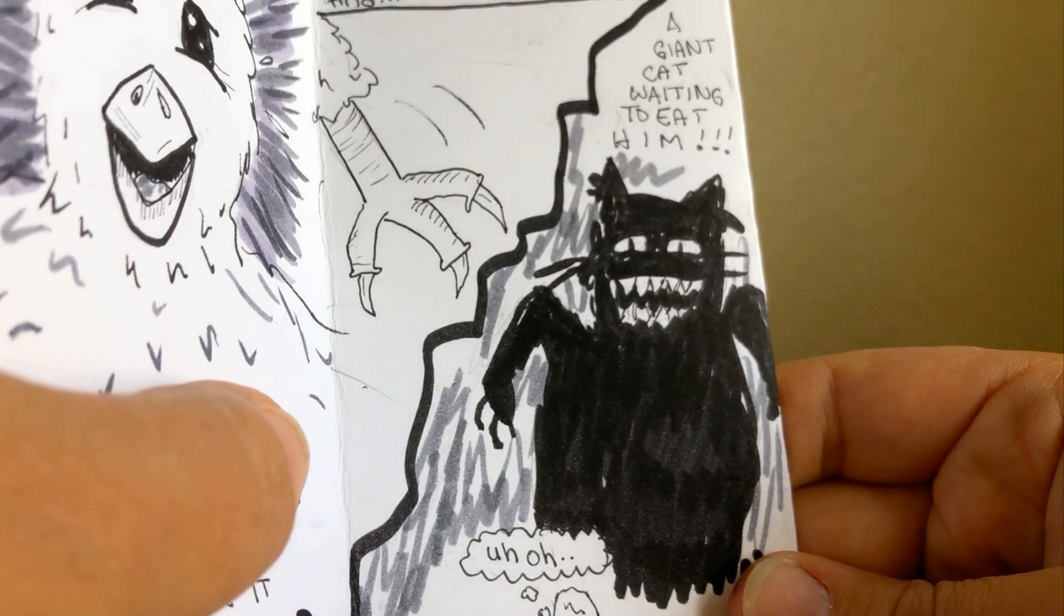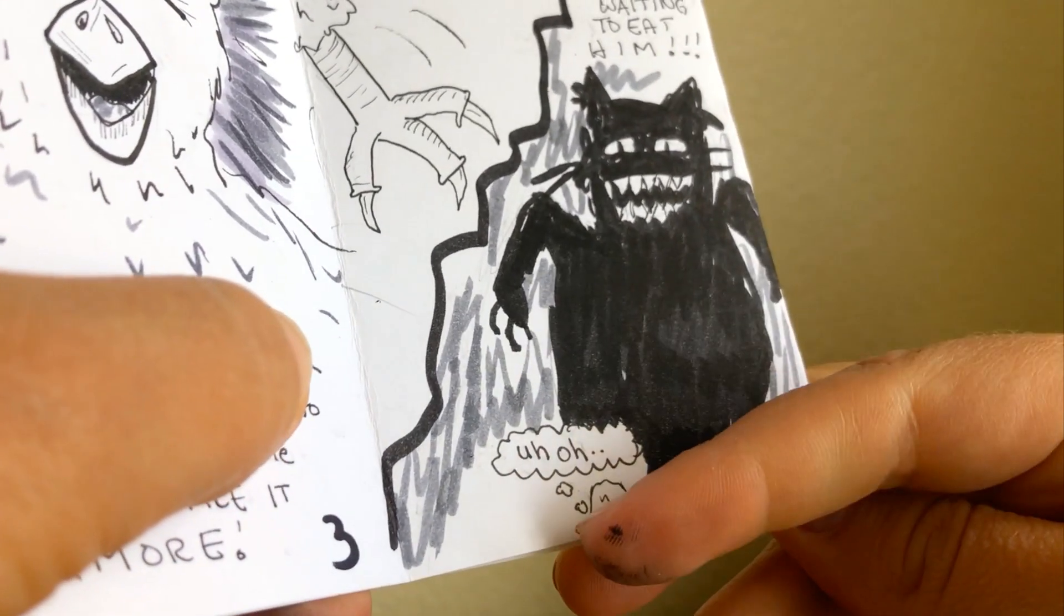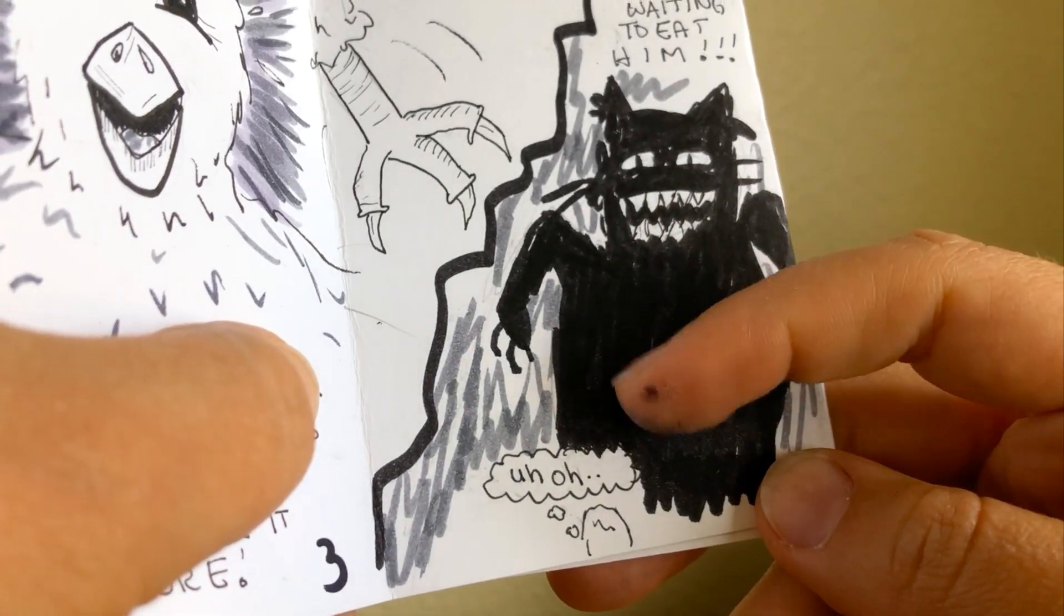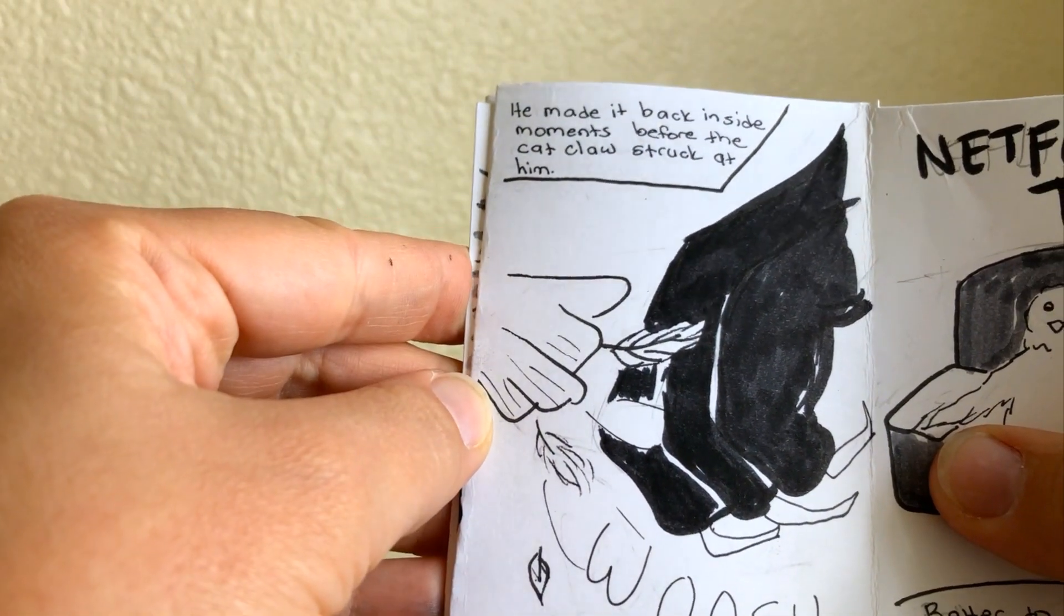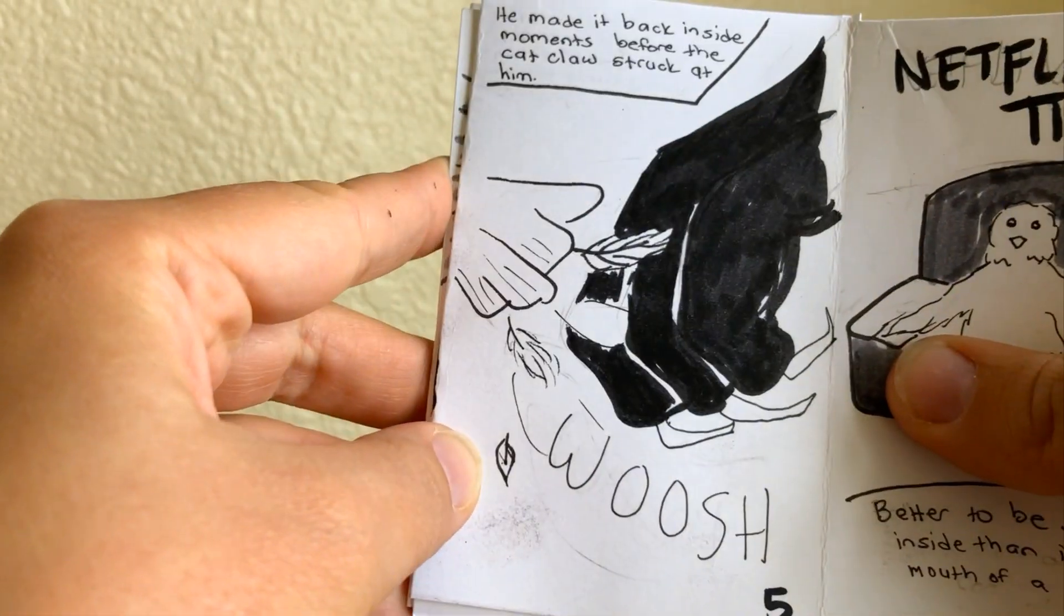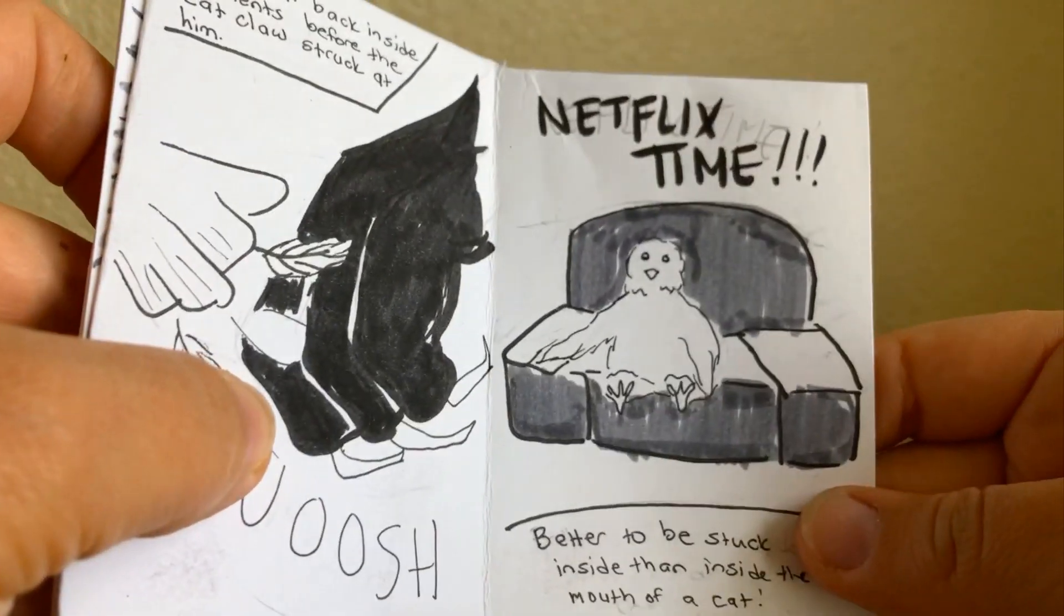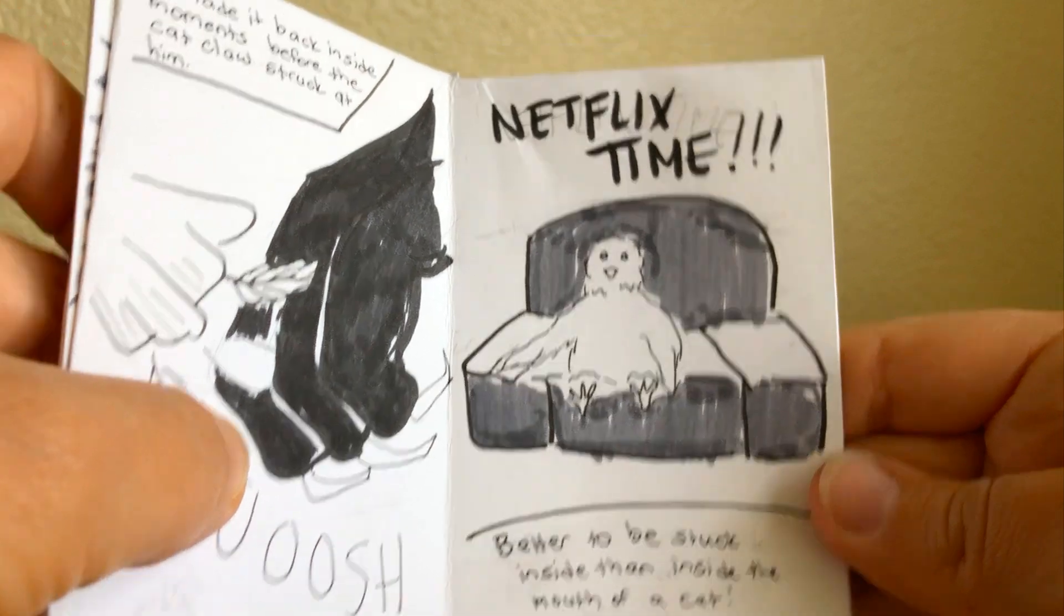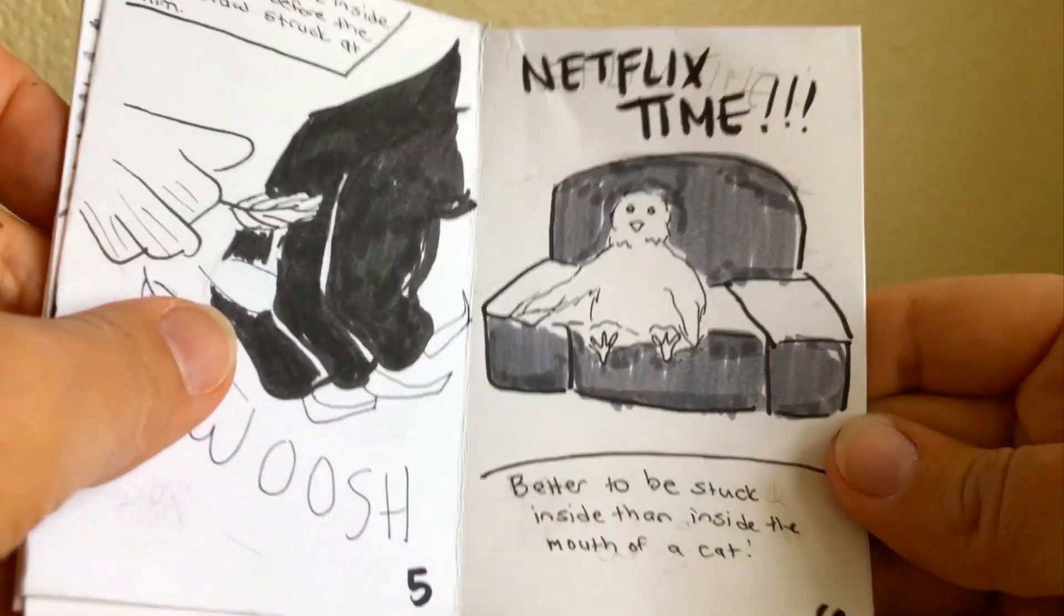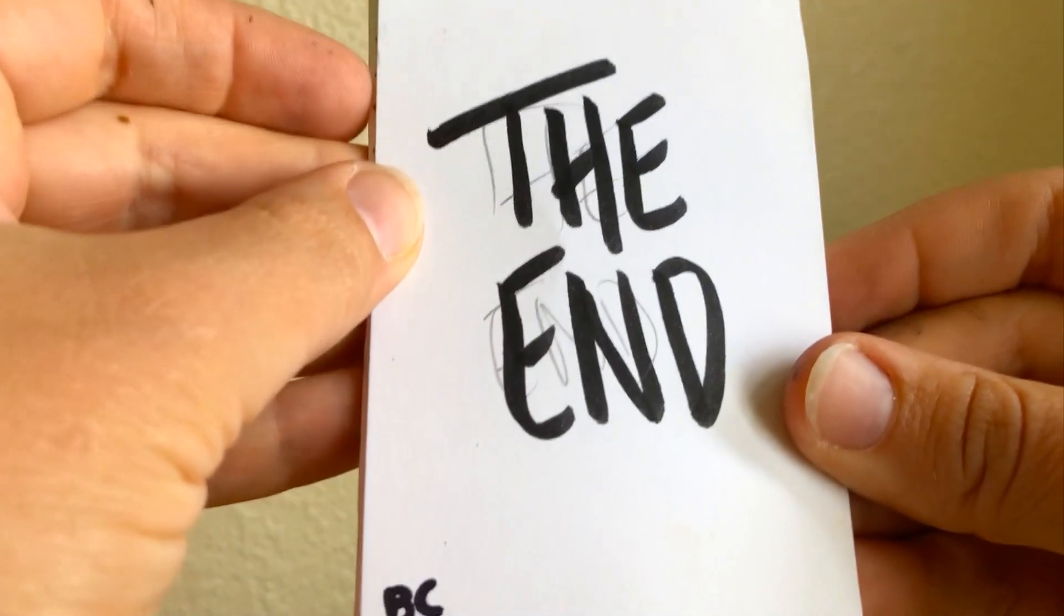He stepped out only to find a giant cat waiting to eat him. "Oh no! He looks like he doesn't really need me for food." He made it back inside moments before the claw struck at him. "Better to be stuck inside than inside the mouth of a cat. Netflix time! Yay." The end.